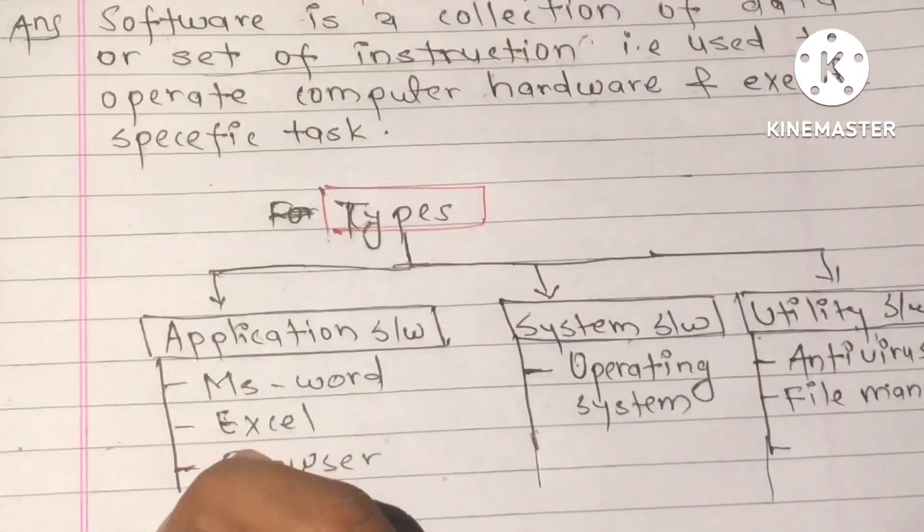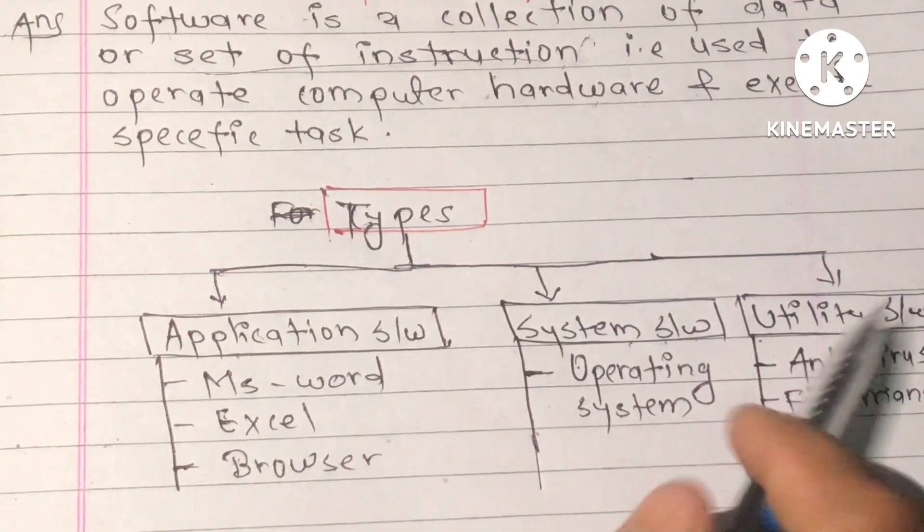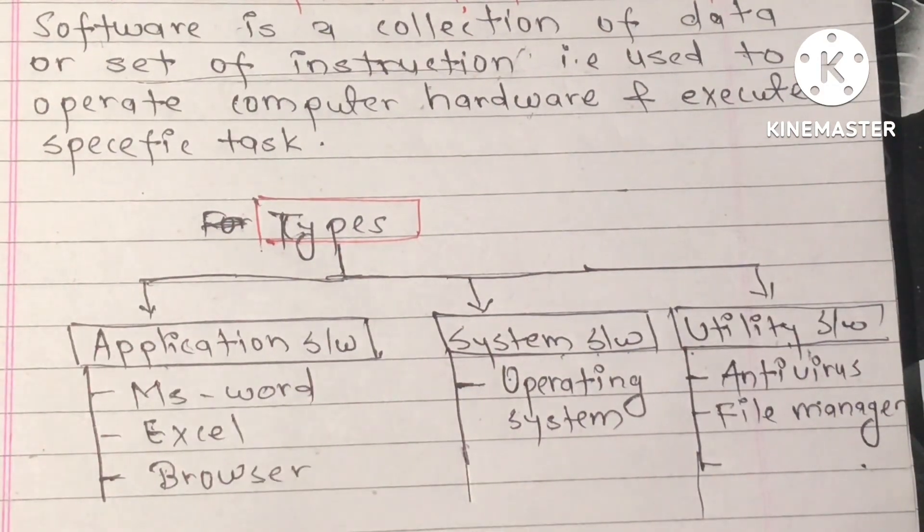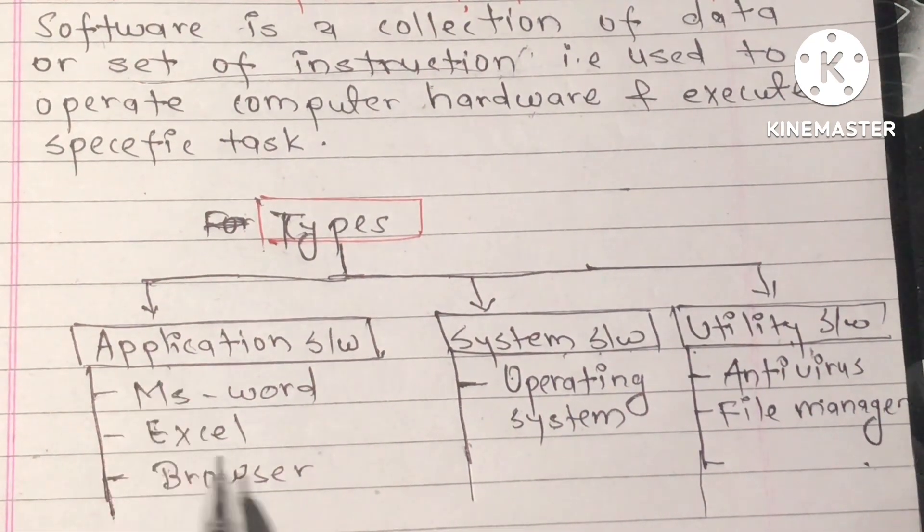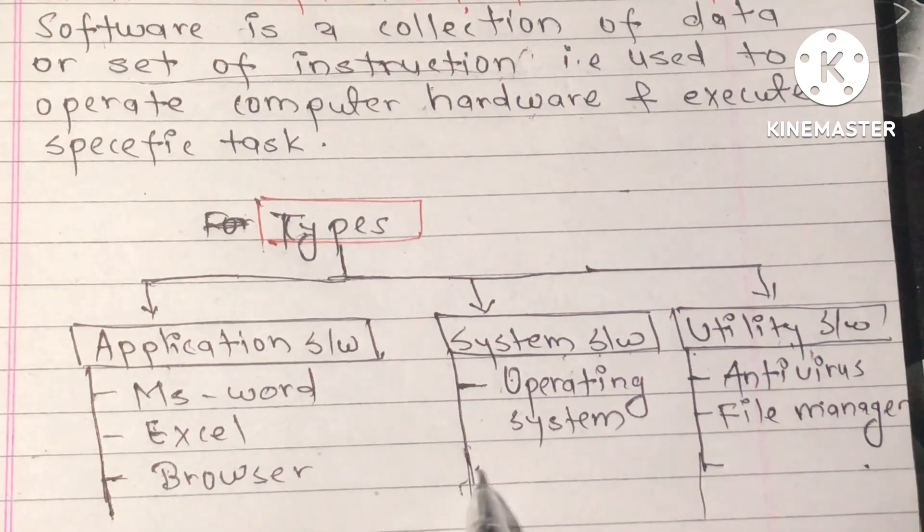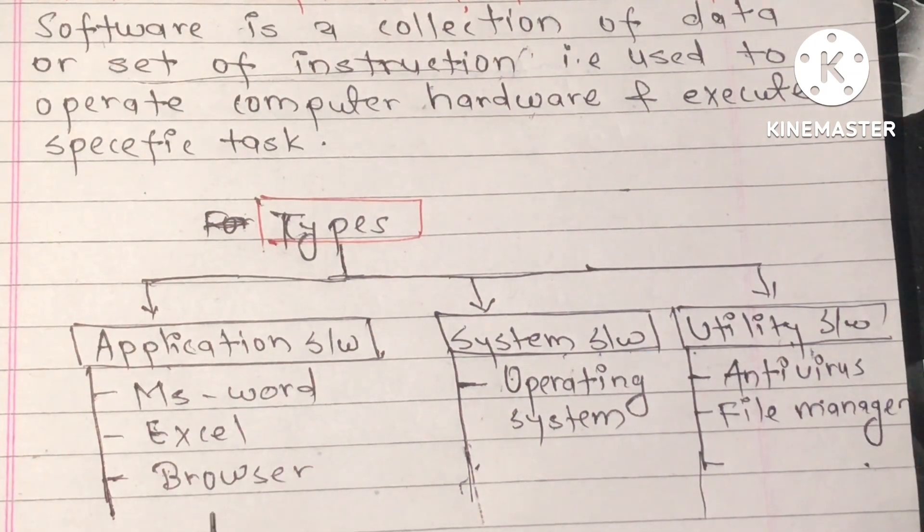System software or utility software. You can type application software like browser, Excel, or Word. Operating systems, and utility software like antivirus and file manager.